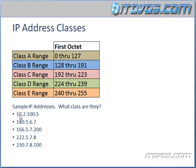The first octet is, for example, the number 10. This is the first octet, then a dot, then number 2 is the second octet, then a dot, 100 is the third octet, and then 5 is the fourth octet. So there are four octets in an IP version 4 address, which has 32 bits, and an octet is 8 bits. So this number 10 is actually 8 bits, and this number 2 is actually 8 bits — that's why it's called an octet.